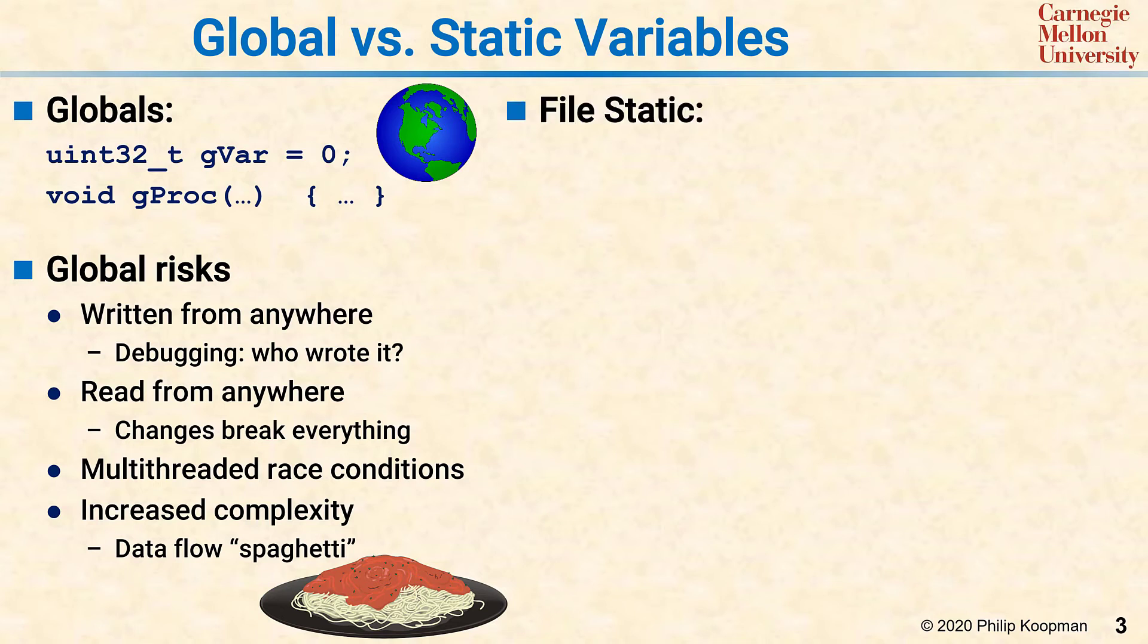File static items are defined in the same way as globals, except they are preceded by the keyword static. For variables, this still means that they are initialized only at startup and that they have persistent values just like globals. However, the static keyword in this case reduces visibility, so modules outside that same .c file cannot see the variable.